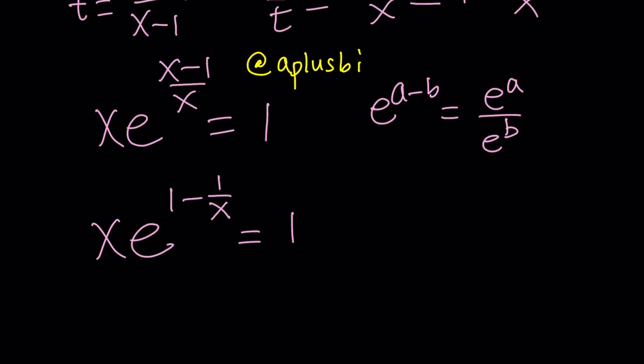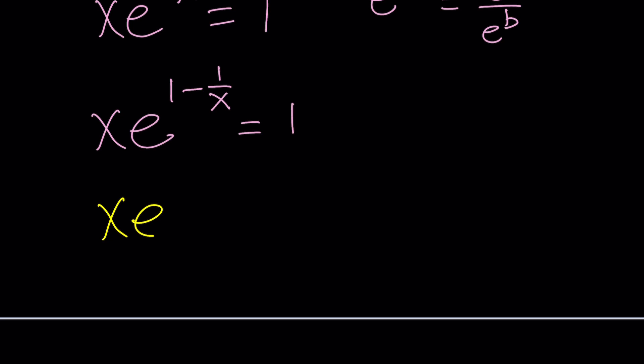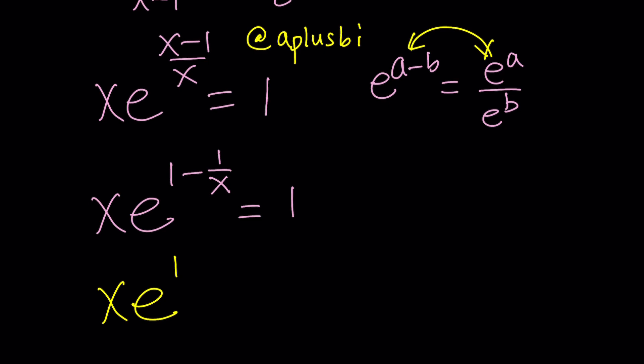So by using this property of exponents or the exponential function, we can go ahead and split it up and write it as x times e to the power 1 divided by it. But you know what? I don't want to write it as a division problem. Or should I write it as a division problem? I don't think so, because that would be too much work.